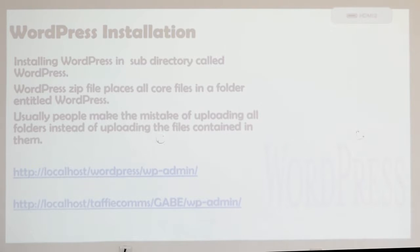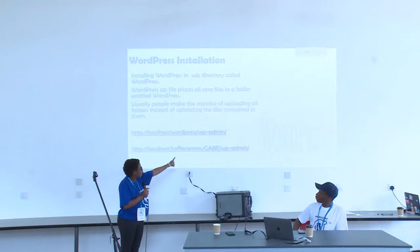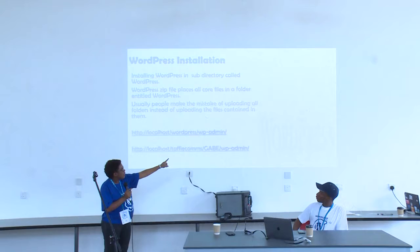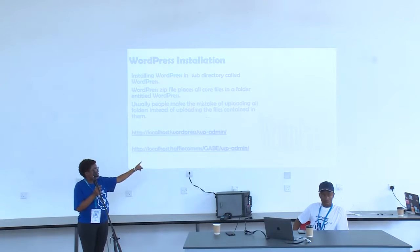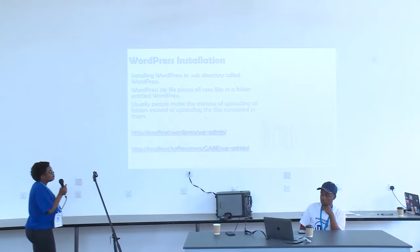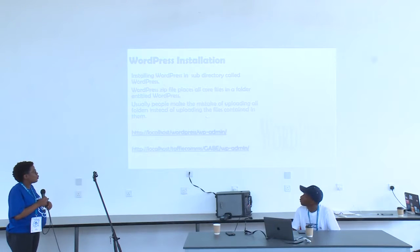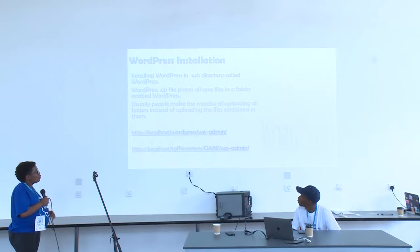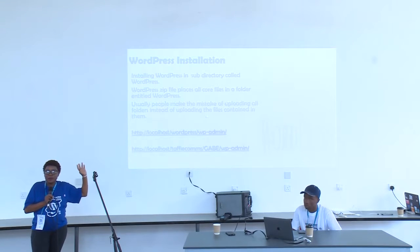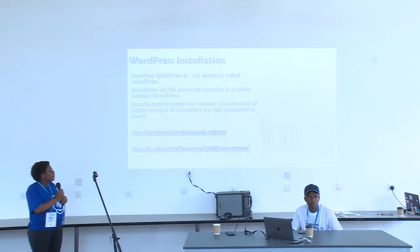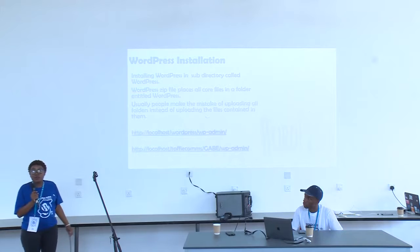For example, on localhost, if you had a path like Tuffy Combs, you open a folder called Tuffy Combs, then a folder called Gabe, and put the WordPress files inside Gabe — that's how you get the full personalized directory. If you don't do that, it results in a WordPress subdirectory, and you really don't want anyone searching your site and seeing that it's WordPress. The WordPress zip file places all core files in a folder entitled WordPress. People commonly make the mistake of uploading the folder instead of the files contained in it — over a million people have made this mistake.